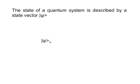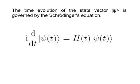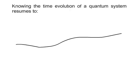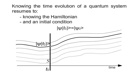The state of a quantum system is described by a state vector Psi from a complex vector state space S. The time evolution of the state vector Psi is governed by Schrödinger's equation, which allows us to calculate Psi if we know Psi. Knowing the time evolution of a quantum system resumes to knowing the Hamiltonian and an initial condition.